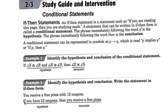So you say if you have 12 coupons, then you receive a free pizza. Notice everything after the if is the hypothesis. Everything after the then is the conclusion.